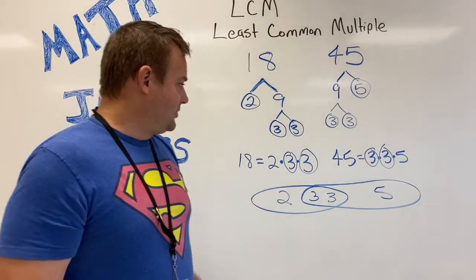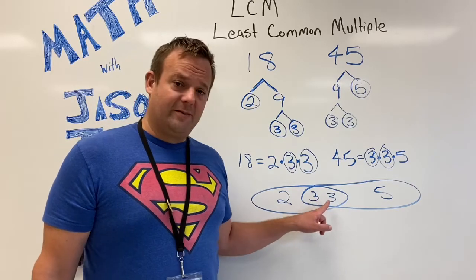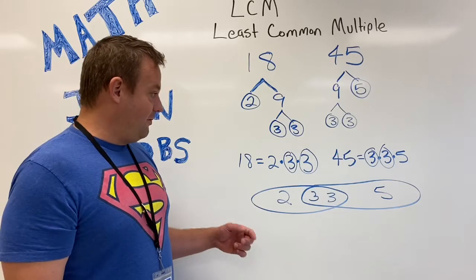In this case, the greatest common factor, the GCF, would be just multiplying the 3 times the 3. That would be 9, so the greatest common factor is 9.